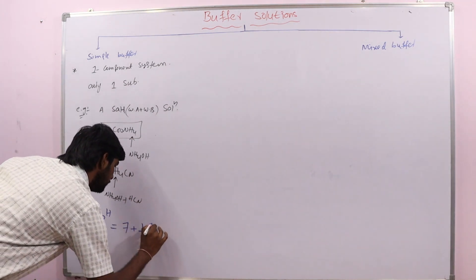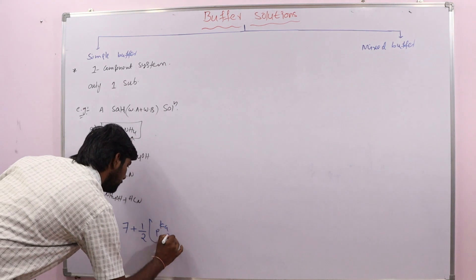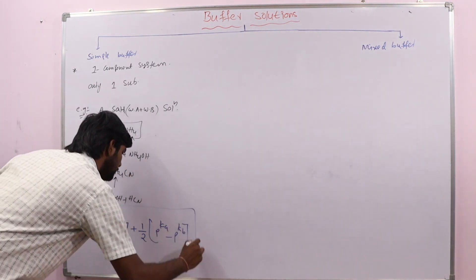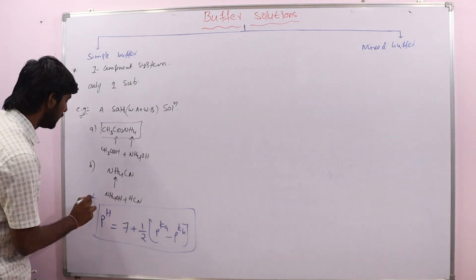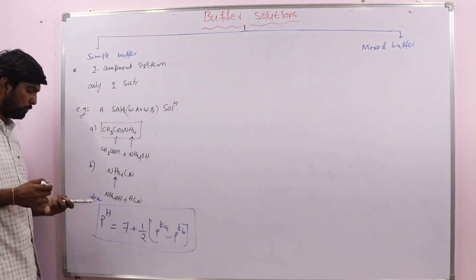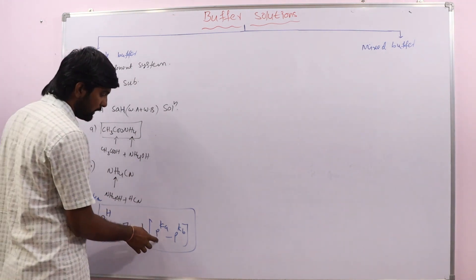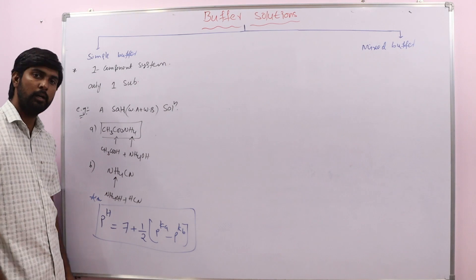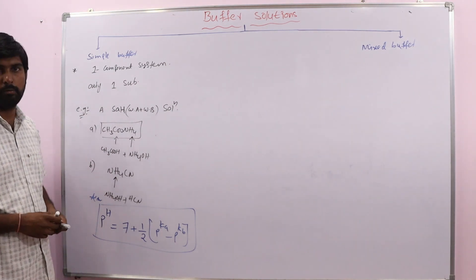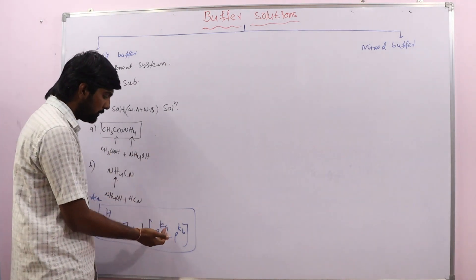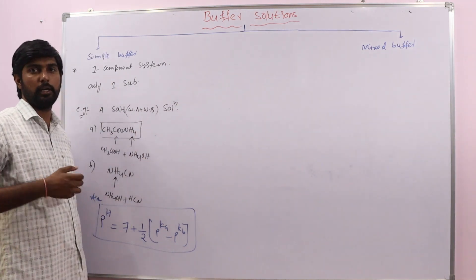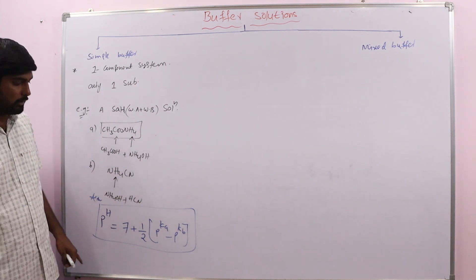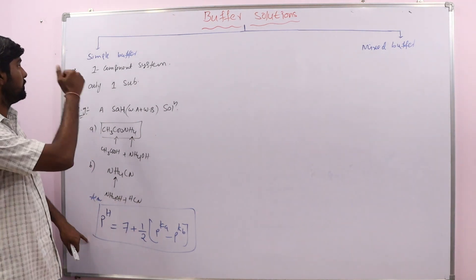Using the formula pH = 7 + (1/2)(pKa − pKb), we can calculate the pH of a simple buffer solution. In problems, they will provide the pKa and pKb values, or they may provide Ka and Kb values from which we should find pKa and pKb, then substitute into this formula to get the pH.